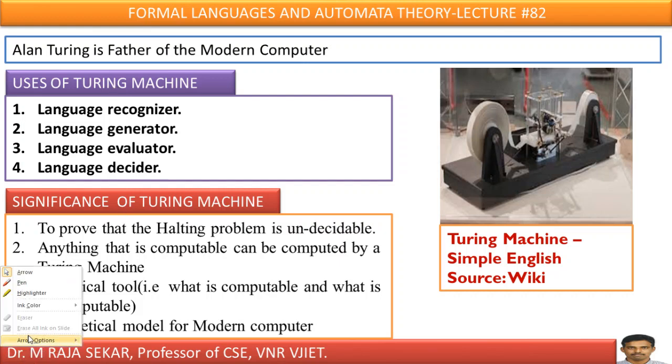As I told you in my first slide, Alan Turing is father of modern computer. What is the purpose, what is the uses of Turing machine? They are useful as language recognizers, language generators, language evaluators, language deciders. What is language deciders, we will try to understand in my future lectures.